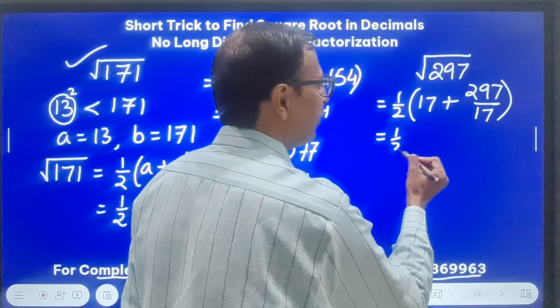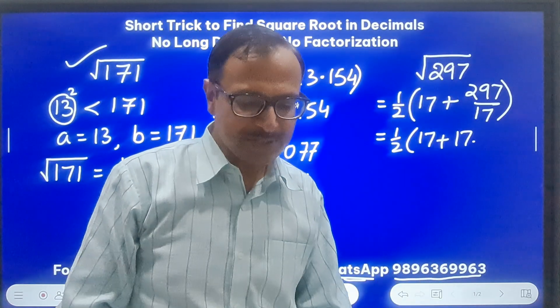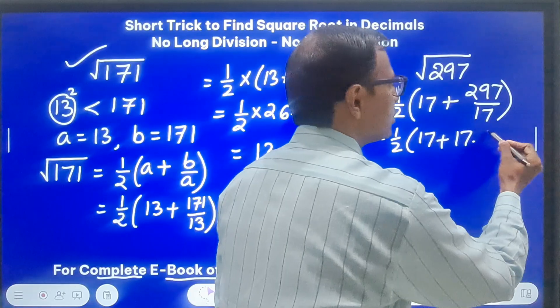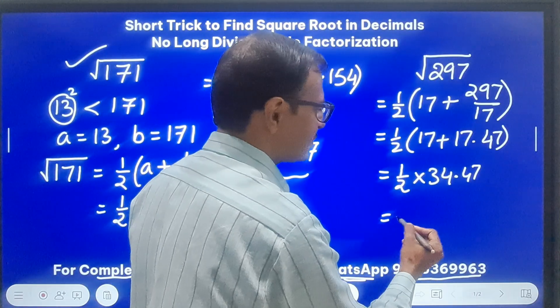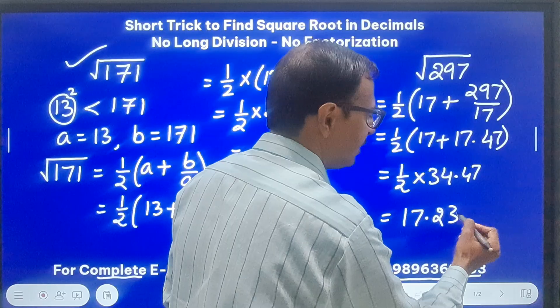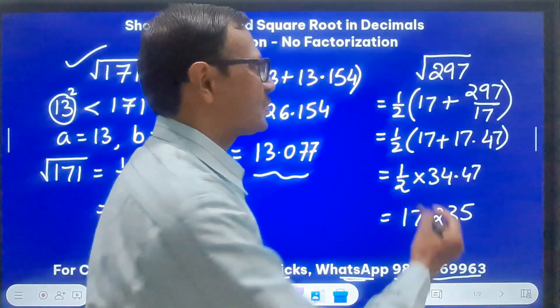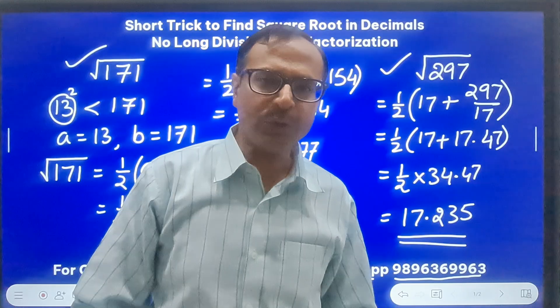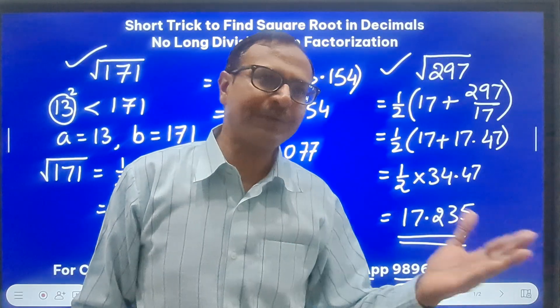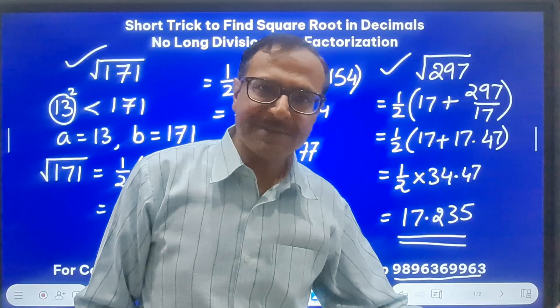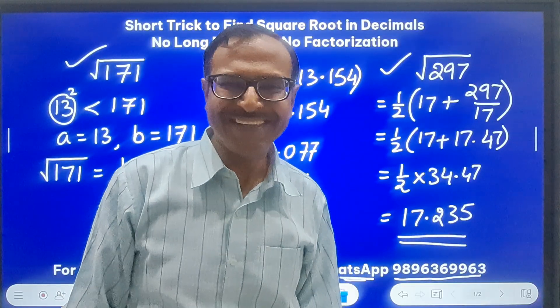This is half of 17 plus and this will be 17 point something because it is very close to 17 square. So it has to be 17 point something, and I've calculated it already for you. This is 47. So this is half of 34.47, and if you take half of this, this will be 17 point two three five. Can you even believe you got your square root? Square root of 297 is this number. You can round it off, and I know this answer is going to be accurate up to two decimal places at least. And that's what we require. In most of the calculations done at school level and competitive level in quant exams, you don't require square roots up to four or five decimal places. You just need two decimal places and that works. So this is the answer.